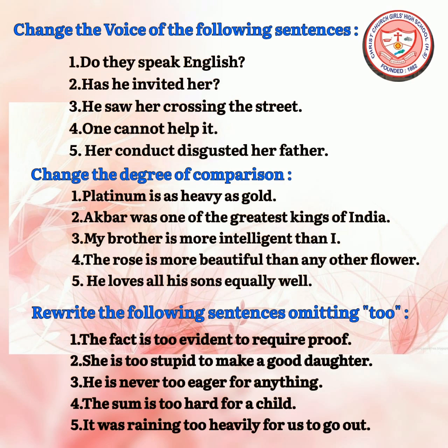(3) My brother is more intelligent than I. (4) The rose is more beautiful than any other flower. (5) He loves all his sons equally well. Exercise three — rewrite omitting 'too': (1) The fact is too evident to require proof. (2) She is too stupid to make a good daughter. (3) He is never too eager for anything. (4) The sum is too hard for a child. (5) It was raining so heavily for us to go out.